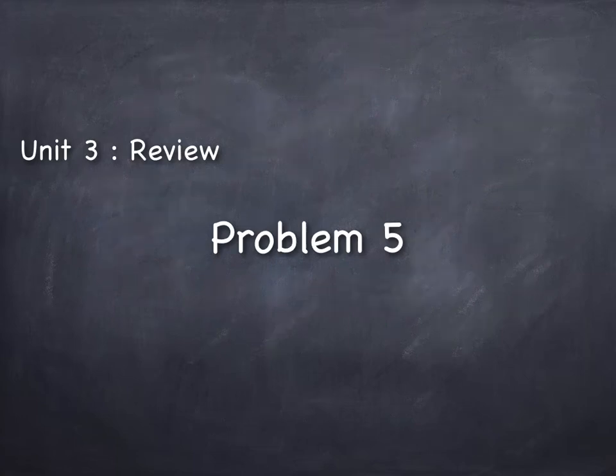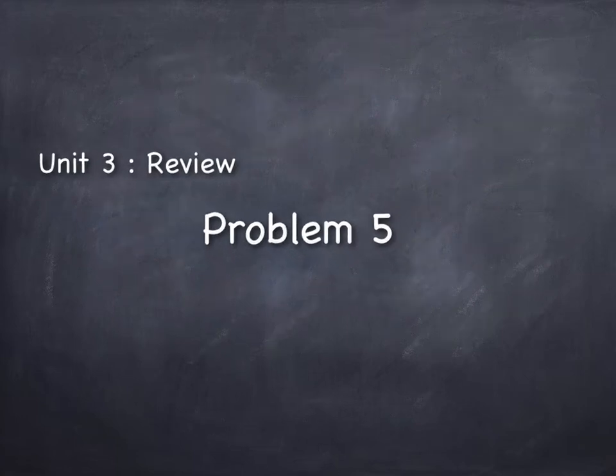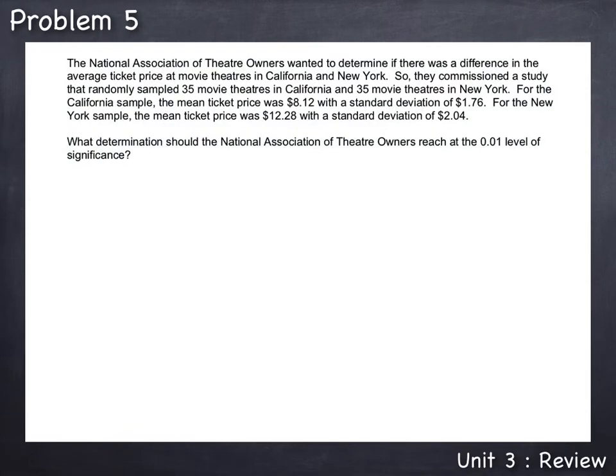Unit 3 Review, Problem 5. The National Association of Theater Owners wanted to determine if there was a difference in the average ticket price at movie theaters in California and New York. So they commissioned a study that randomly sampled 35 movie theaters in California and 35 movie theaters in New York.